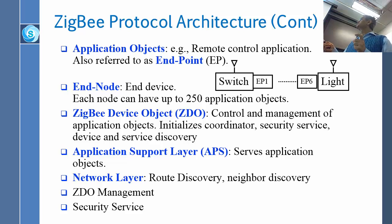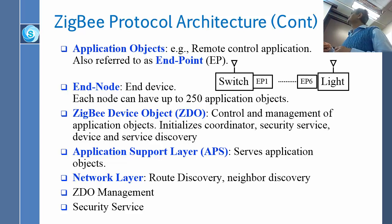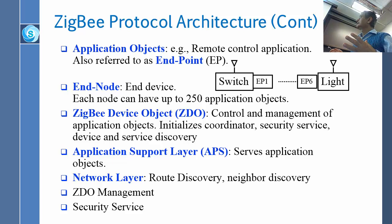A device can have up to 250 objects, which means it can have up to 250 endpoints. For example, endpoint 6 is a light and endpoint 1 is a switch — if you connect them together, you can switch on the light. That is a device. The control management of the application objects is called ZigBee Device Objects (ZDO). There is one endpoint — endpoint 0 — that is the network operation itself, handling control and management of application objects, including the coordinator, security service and everything else.